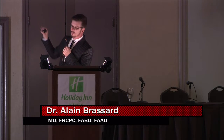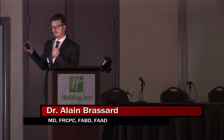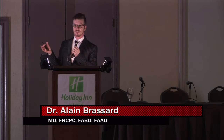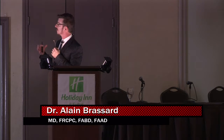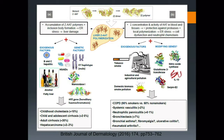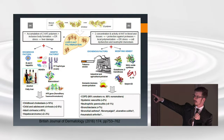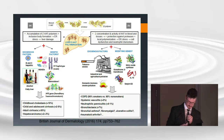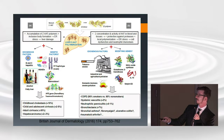If the two Z genes are present, you still produce alpha-1 antitrypsin but it doesn't go anywhere — it's trapped in the liver. Similarly, most of that enzyme is produced by the liver, some by the lungs. If you drink, smoke, or have certain viruses, it could destroy your liver or lungs more rapidly. And here in the skin, it's very rare that we have skin manifestations.